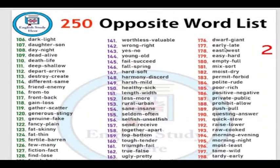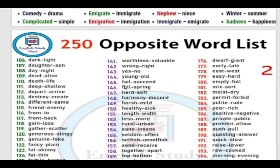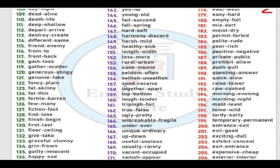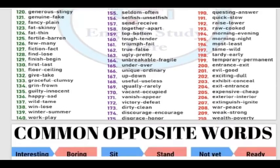250 opposite words — you can just read them and learn them well. Dark – Light. Worthless – Valuable. Dwarf – Giant. Early – Late. East – West. Read loudly and learn it well.